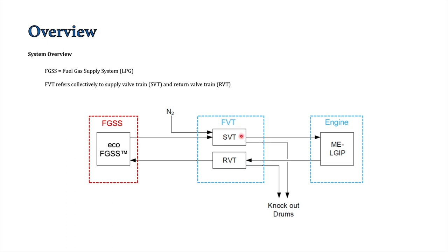Here comes the fuel valve train. This is basically a safety system or you can say a kind of wall that separates the supply system and the main engine. During normal operation of the engine during start and stop, this fuel valve train—the supply valve train and return valve train—are controlled automatically and run the main engine.